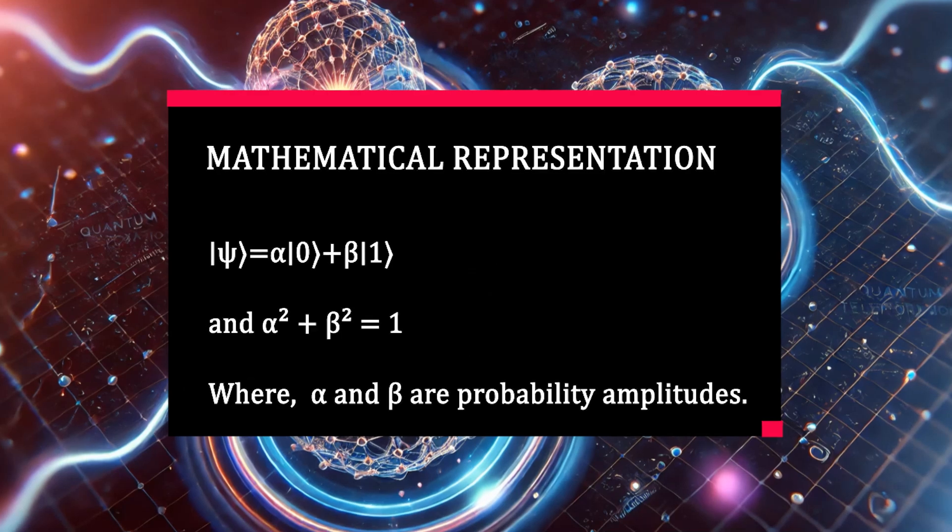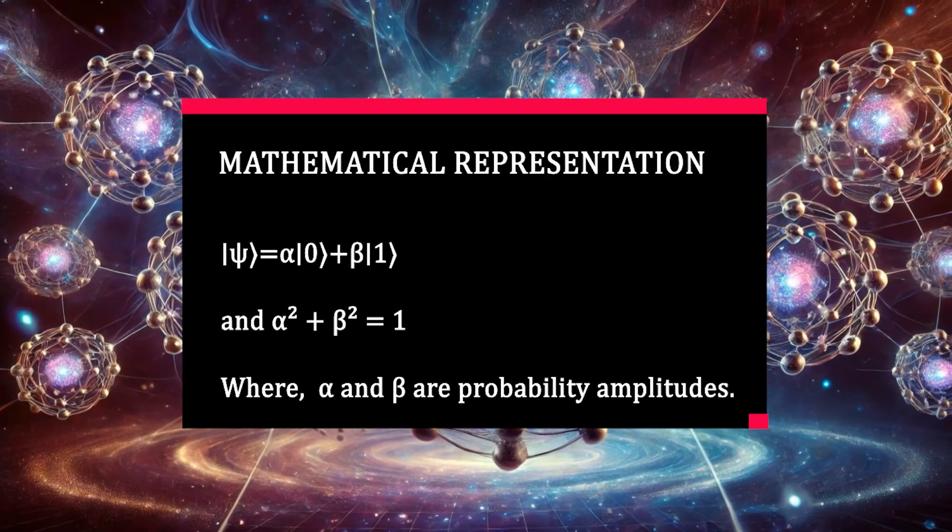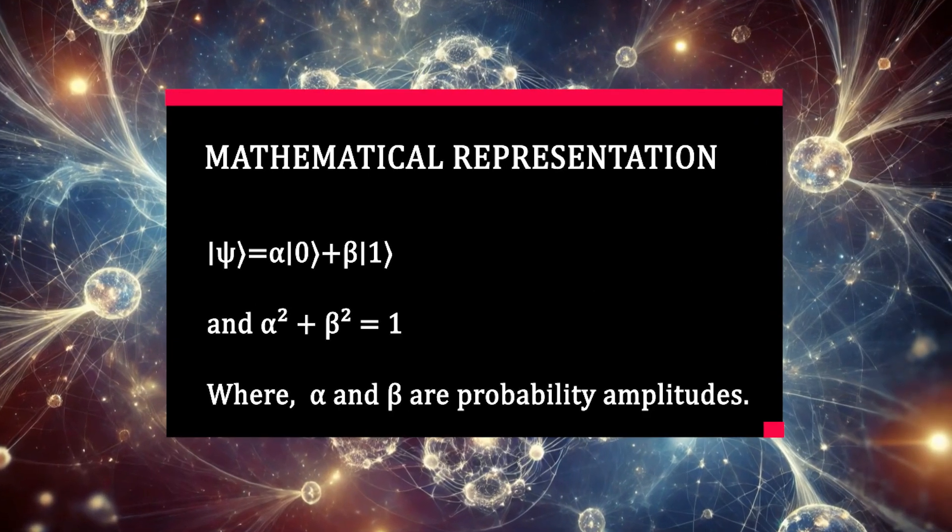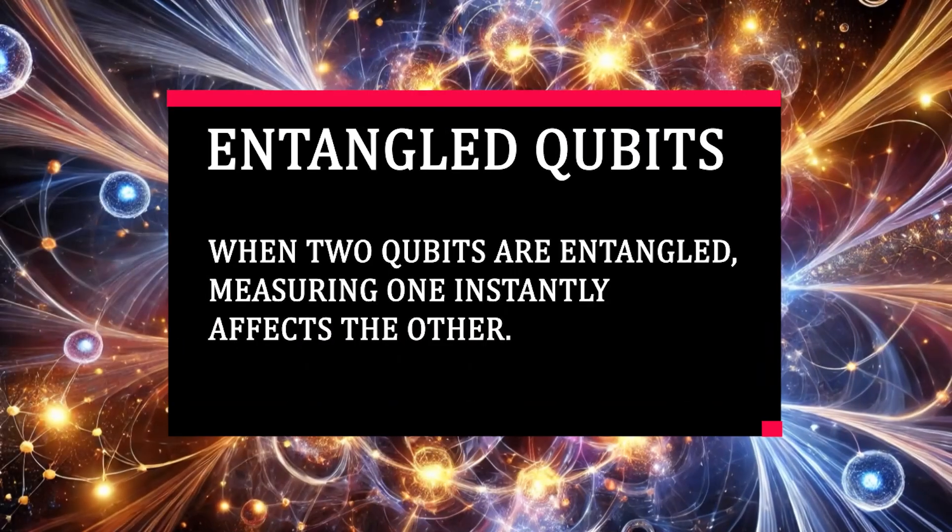Mathematically we represent a qubit state as |ψ⟩ = α|0⟩ + β|1⟩, where α and β are probability amplitudes. Their squares must add up to one.